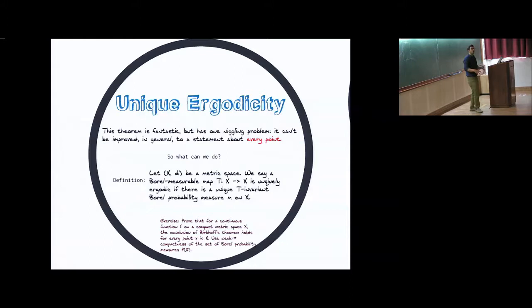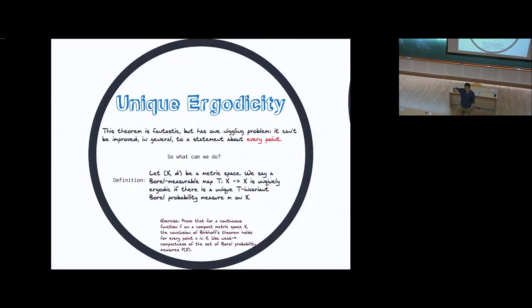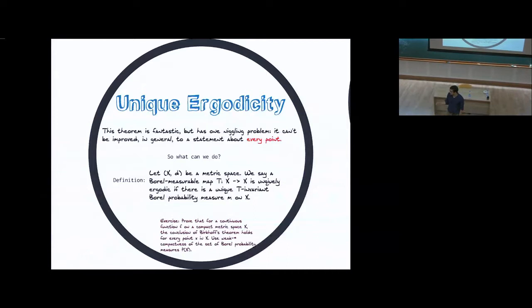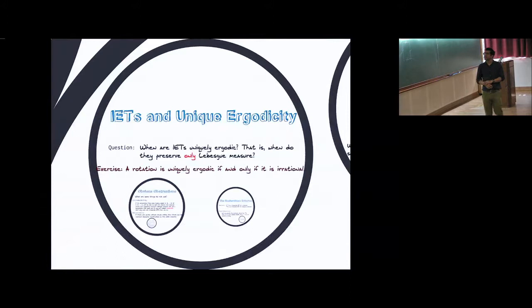What's an example of a uniquely ergodic system we've already seen today? The circle rotation with alpha irrational — Lebesgue is the only preserved measure. In particular, that says if I look at a circle rotation, I know that every single point equidistributes as I follow it around. The question is: can we say this about IETs? Can we say this about billiards? Can we say this about flat surfaces? When is an interval exchange transformation uniquely ergodic — that is, when do they preserve only Lebesgue measure?